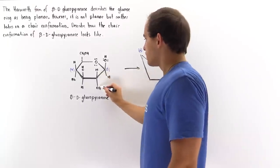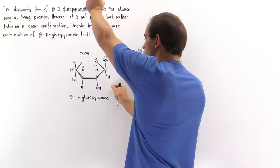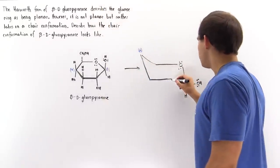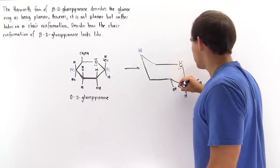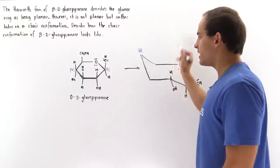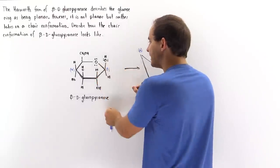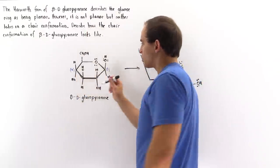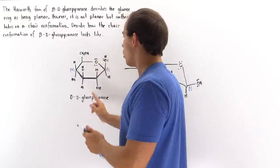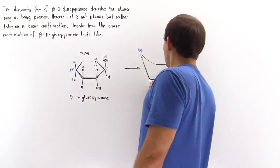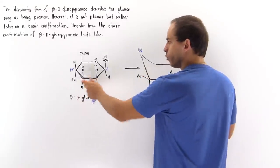On carbon number two, if we pluck it downward, the OH will point along the equatorial position, while the H will point upward — because here the H also points upward. For carbon number three, this one is plucked downward, so the OH points along the equatorial position while the H points downward, because it also pointed downward in the Haworth form.